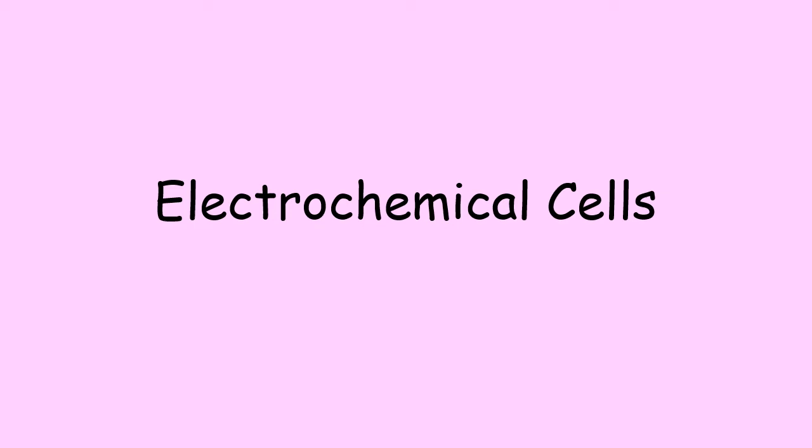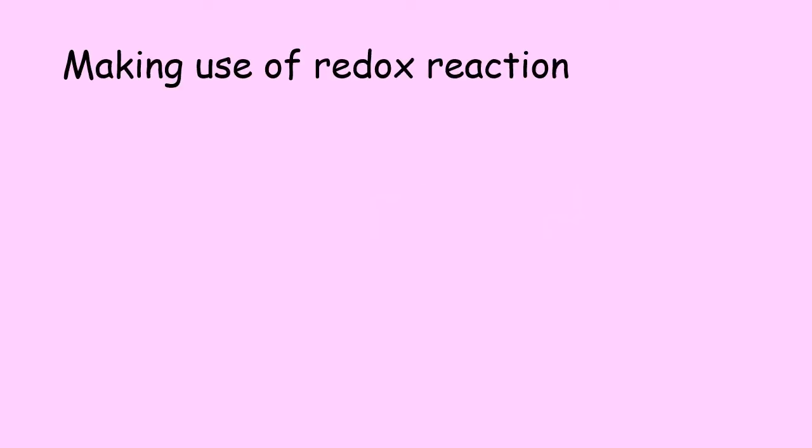Welcome back to another National 5 Chemistry lesson. We're still on unit 3 on the topic of metals, but the subject for this video is going to be electrochemical cells. Electrochemical cells are ways in which we can use metals to generate electrical power. We're going to be using redox reactions of metals in order to make these electrochemical cells.